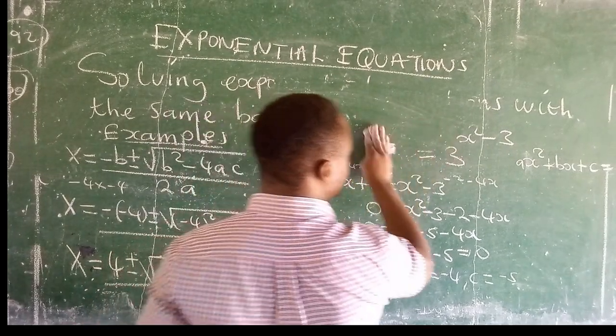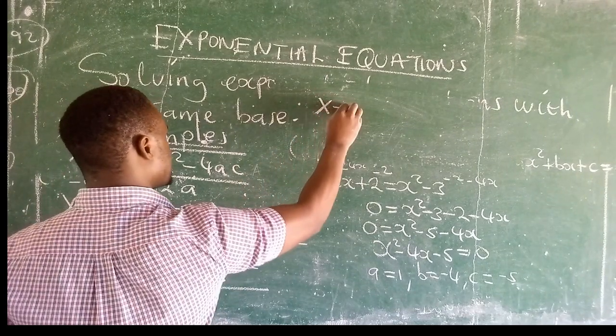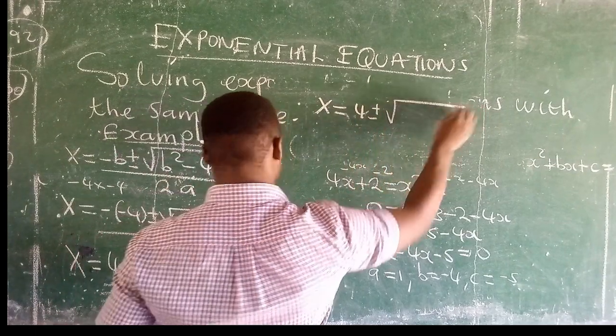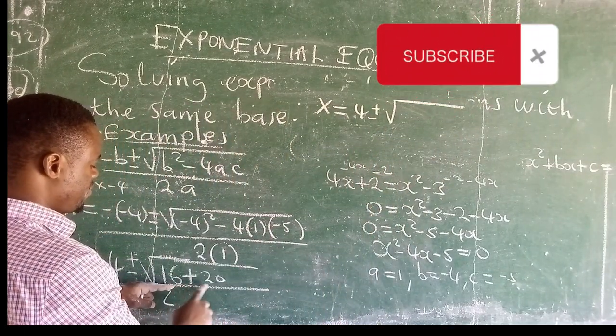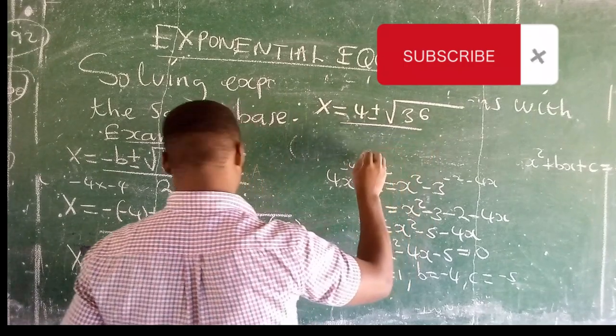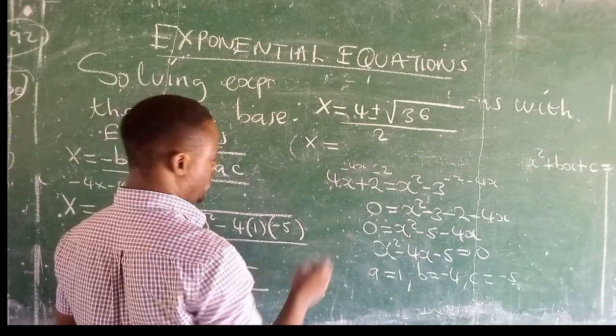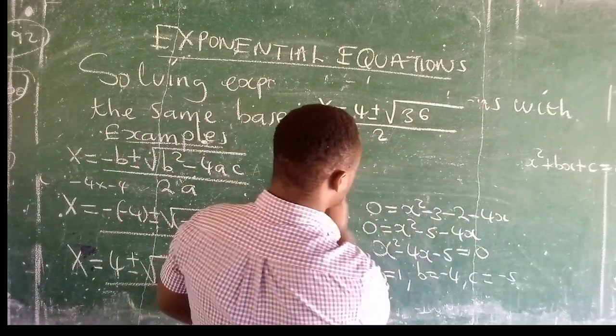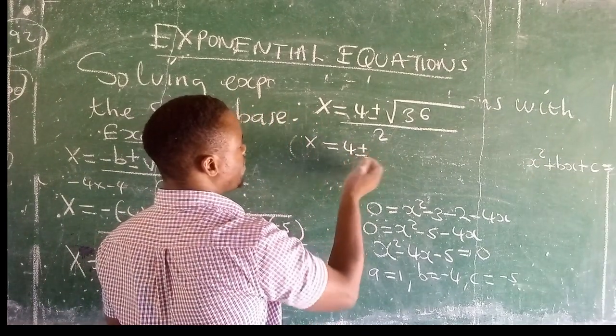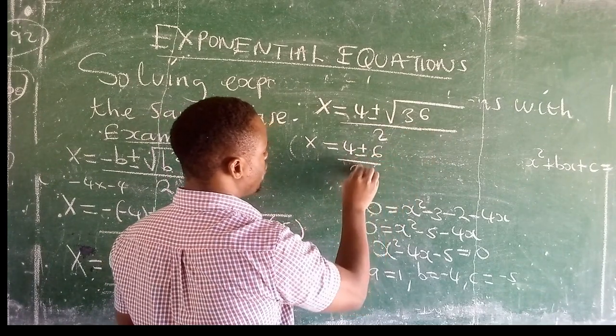So now what we have is x is equal to 4 plus or minus, that is 16 plus 20, that gives us 36 over 2. The root of 36 is actually 6 over 2.